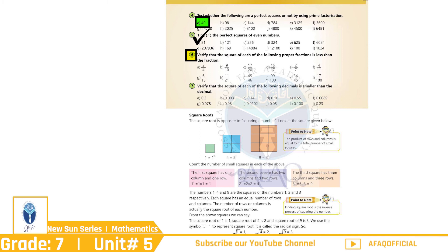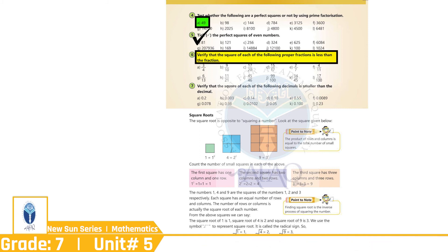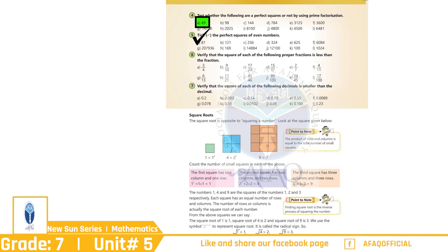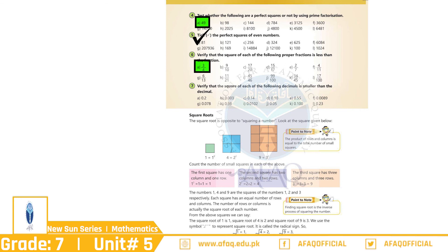Question No. 6: Verify that the square of each of the following proper fractions is less than the fraction. A. 3/4 — بچو، اگر ہم 3/4 کا square لیں گے تو ہمارے پاس آئے گا 9/16۔ اگر آپ غور کریں تو 9/16 ایک چھوٹا fraction ہے 3/4 سے۔ اسی طرح آپ نے اگلے سوال خود حل کرنے ہیں۔